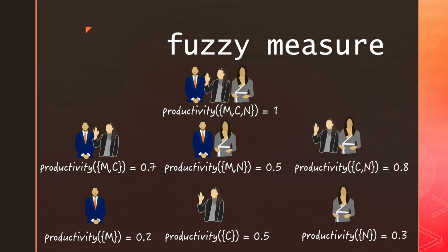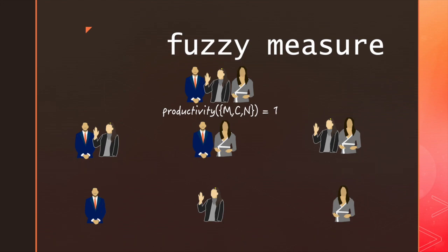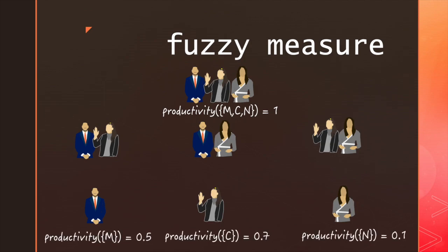However, it might not always work like this. Productivity isn't always additive. Individually, let's say Melo can produce 0.5 crates, Candice 0.7, and Nika 0.1.